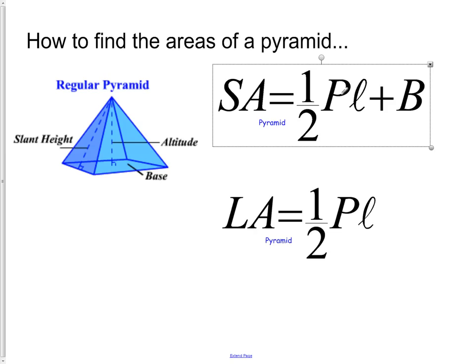We have actually three new letters that we've never seen before. P is perimeter. L is slant height. And the capital B actually stands for the area of the base.